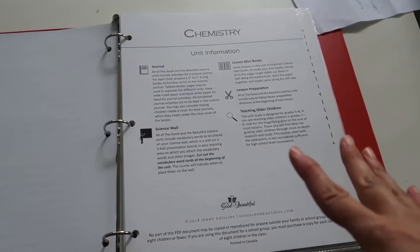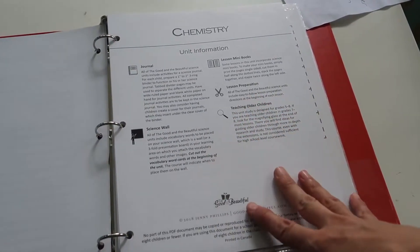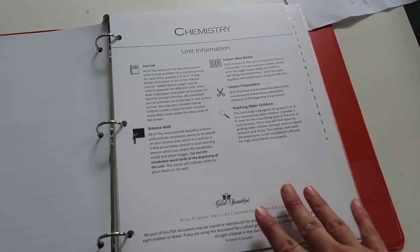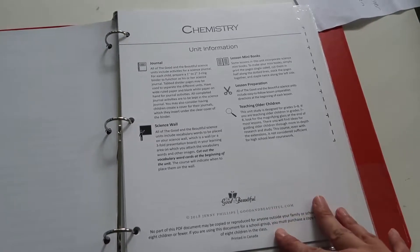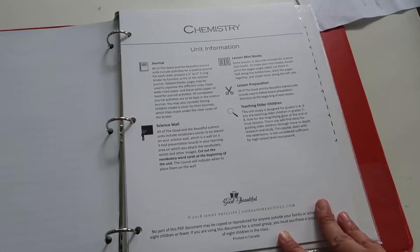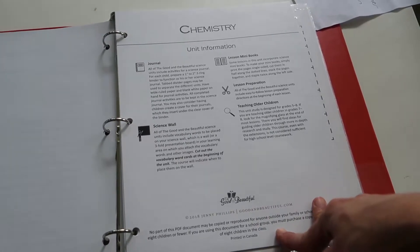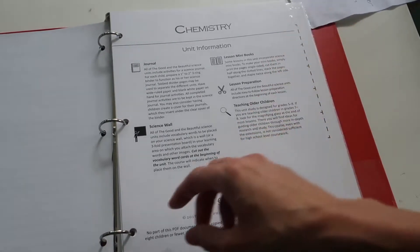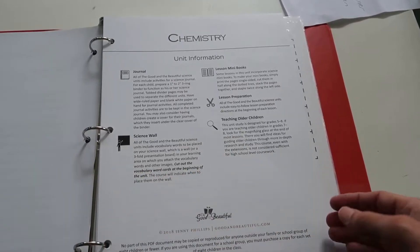So if you're not familiar with the Good and the Beautiful science, they have a bunch of different units. They have units like marine biology, arthropods, energy, human body, water in our world, safety, and lots more. So I'll link their website in the description below.